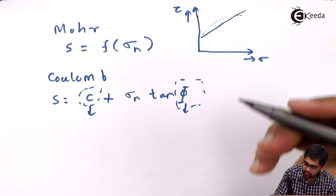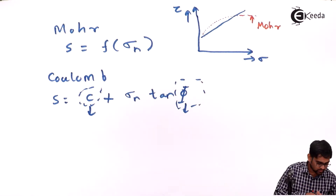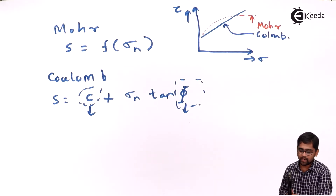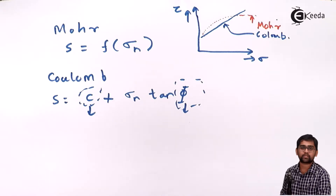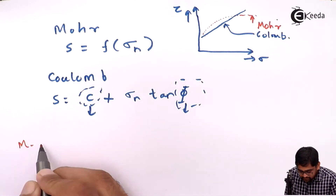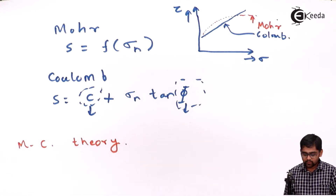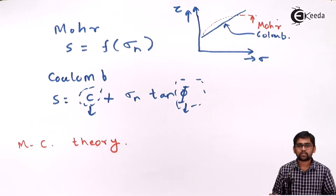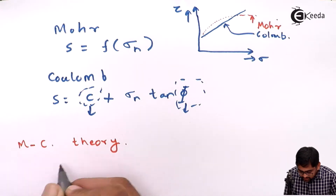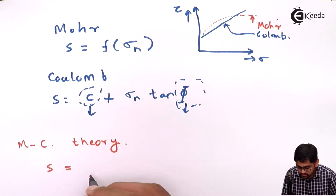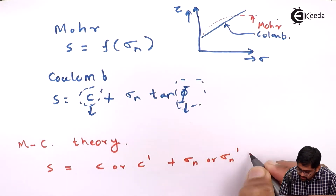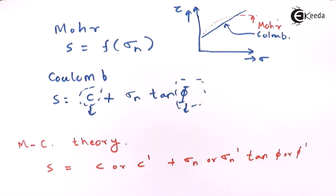Combining these two theories — which we always refer to as the Mohr-Coulomb theory — gives a general expression for shear strength: S = C (or C′) + σn (or σn′) · tan φ (or φ′). Here C, σn, and φ represent total stress parameters — including effective stress plus pore water pressure — while the dashed notation C′, σn′, φ′ represents effective stress parameters. This is the general expression for the Mohr-Coulomb theory.